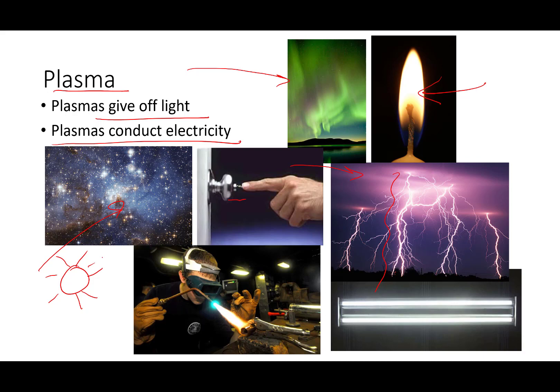Welders cut with a plasma torch, but they don't always have to be really hot. Fluorescent light bulbs. If you have a fluorescent light bulb in your home, that is actually a plasma. So these things give off light. We have them all over our homes and they are not normal matter.